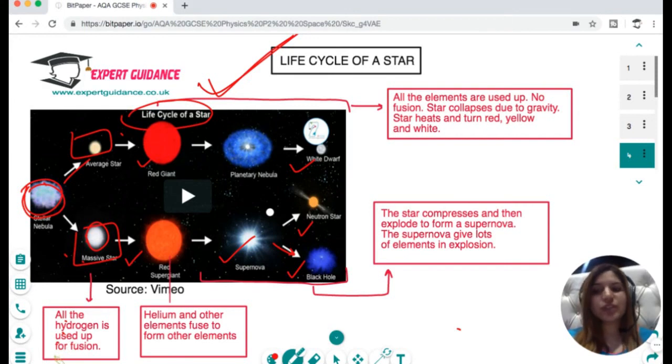As all the hydrogen is used up for fusion, then the gravitational pull and fusion are no longer balanced and the star explodes. Here all the elements are used up, no fusion, the star collapses due to gravity, and the star heats and turns red, yellow, and white.